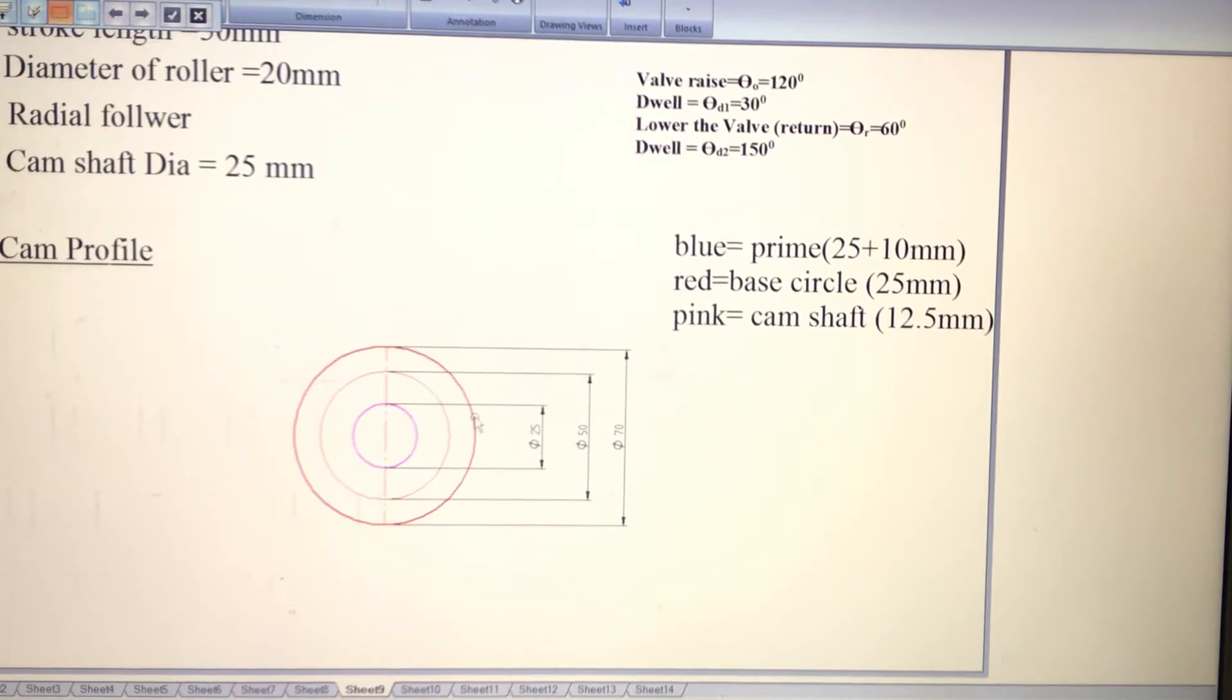The base circle is 50 mm diameter, and the next one is the prime circle. In case of knife-edged follower, you don't have any prime circle, but here in case of roller follower, the trace point is exactly at the middle of the roller, so that is why you need to find out prime circle radius.